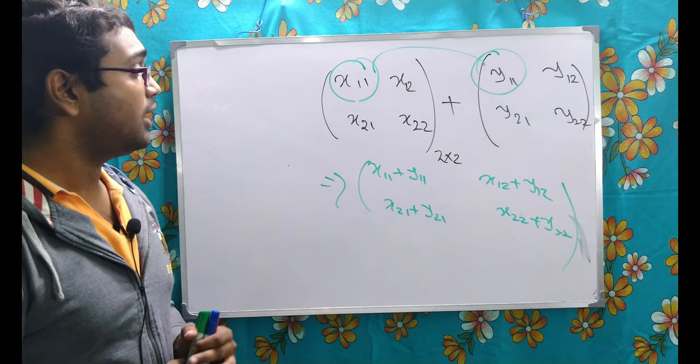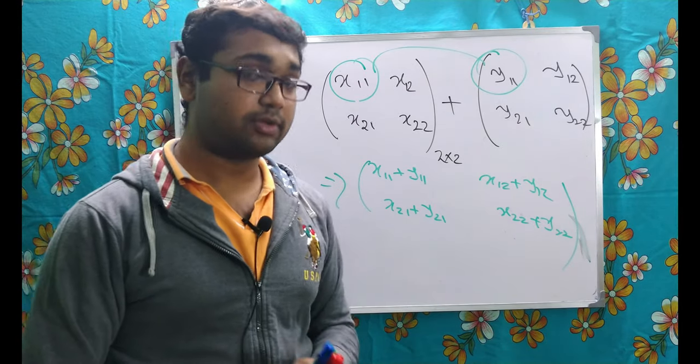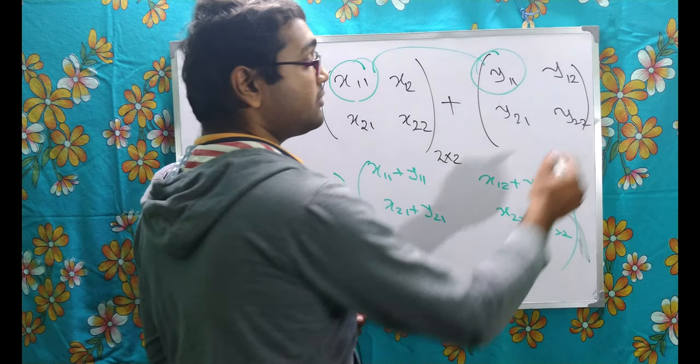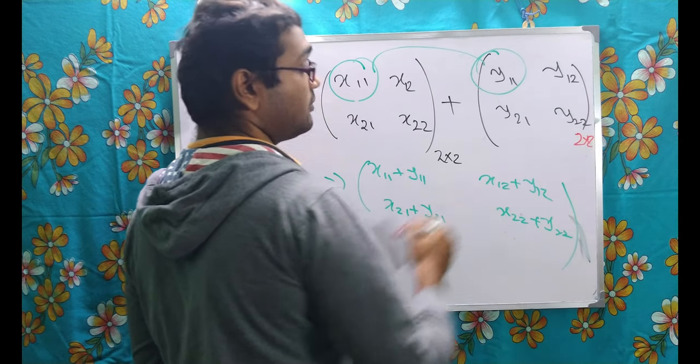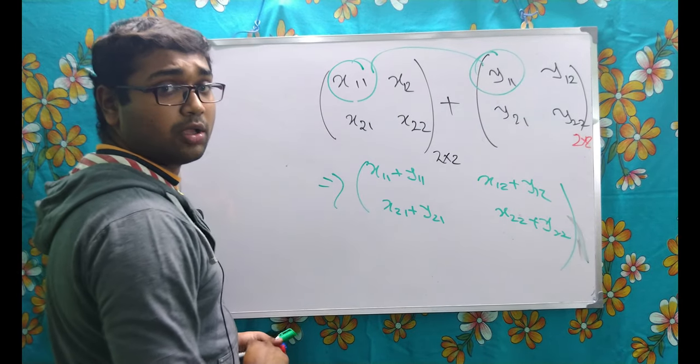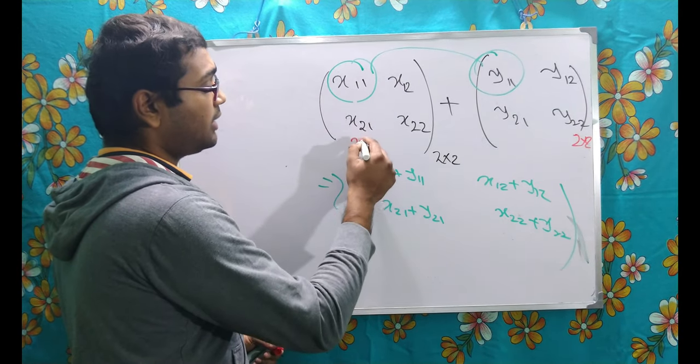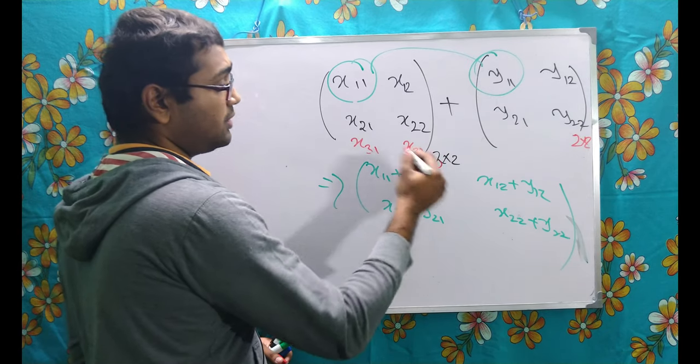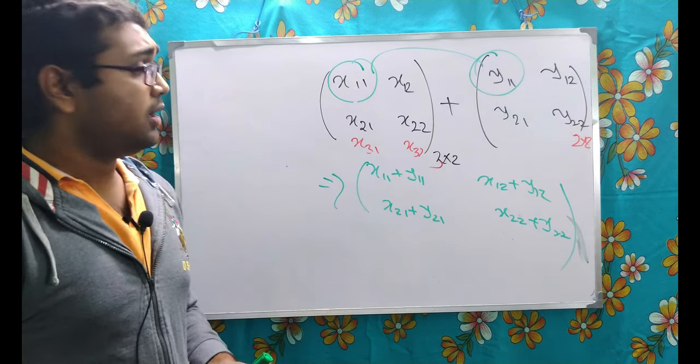But, one thing, if and only if the order of the matrix is same, then only matrix addition is possible. Because, just imagine if I had one more row here, like x 3 1 and x 3 2 and then it would be 3 cross 2 matrix.